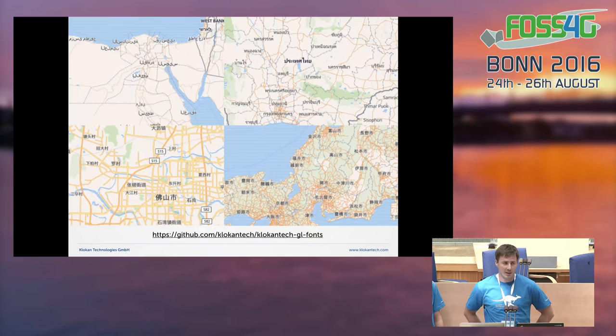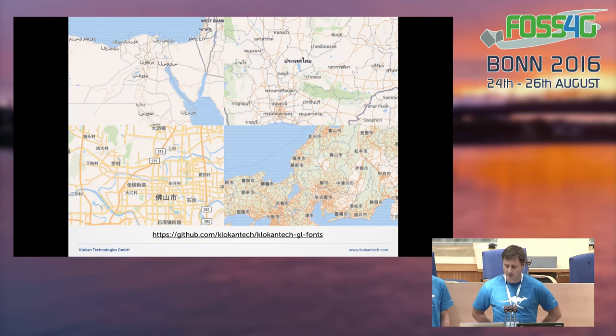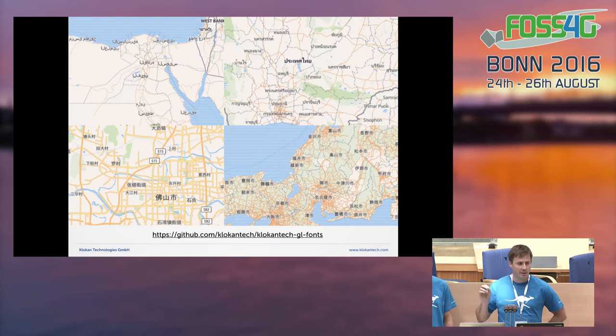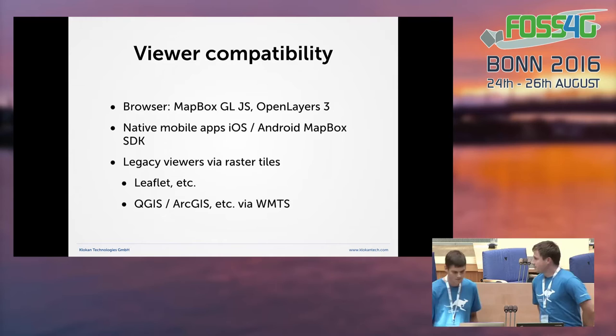Fonts are a bit of an issue, especially if you're looking for a worldwide font. Mapbox licenses Arial from Microsoft. We worked on converting the Noto fonts — free fonts from Google — into the required format and merging them together. This is now available on GitHub, so you can quite easily create a global map with all character glyphs in Japanese, Chinese, Arabic, Hebrew, and other languages.